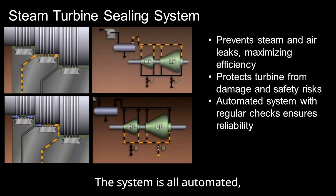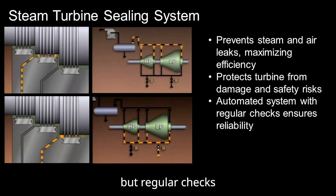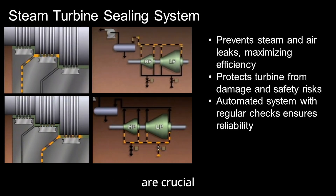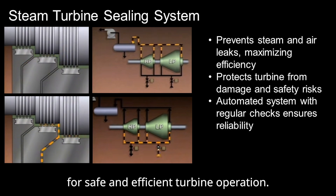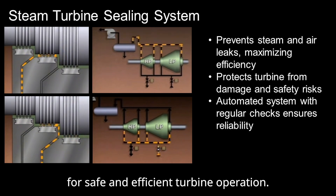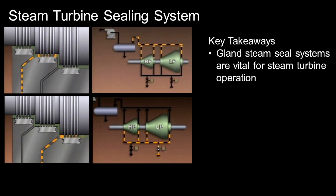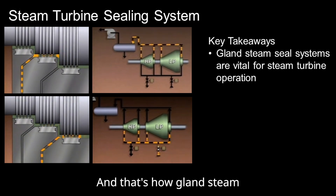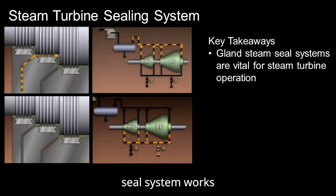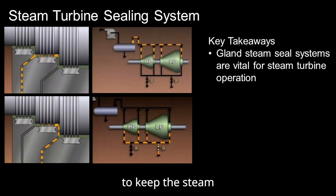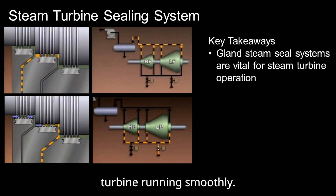The system is fully automated, but regular checks are crucial for safe and efficient turbine operation. And that's how the gland steam seal system works to keep steam turbines running smoothly.